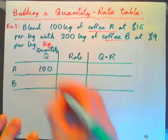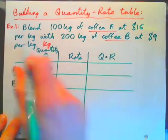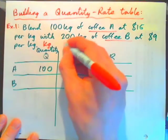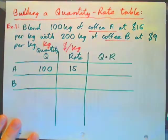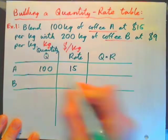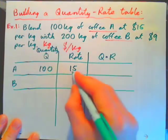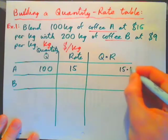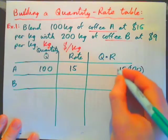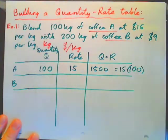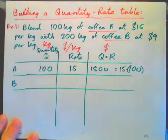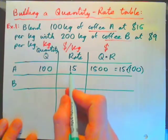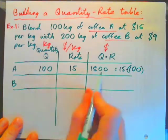So our coffee A, 100 kilograms, and the rate is $15 per kilogram. So rate, 15. That's dollars per kilogram is our rate. And if I do this quantity times rate, I'll be doing 100 times 15, or 15 times 100, which gives me 1,500, and this is in dollars. Because 100 kilograms, $15 each per kilogram, that's $1,500 total cost.